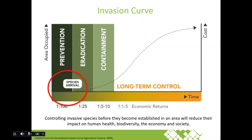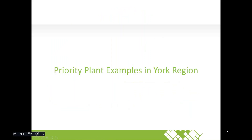This graph depicts the invasion curve, which illustrates the feasibility of eradicating an invasive species over time — the feasibility decreases as time goes on, to the point where it can no longer be possible to fully control that species. The red circle shows where we focus at the Early Detection and Rapid Response Network: at or before the species' arrival — whether into Canada as a whole, Ontario, or further spread throughout your community. The earlier a species is detected, the better, as controlling invasive species before they become established helps reduce impacts on ecology, economy, and society.